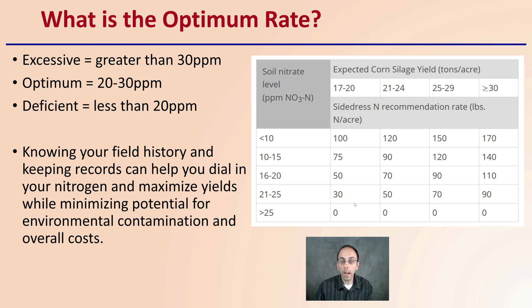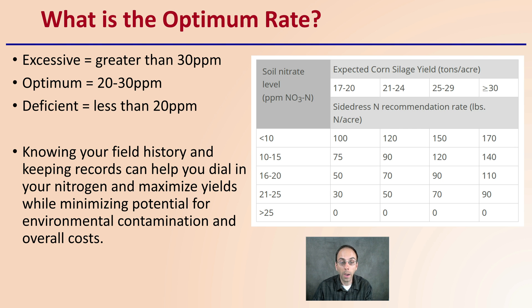What is the optimum rate? Excessive would be greater than 30 parts per million. Optimum is at 20 to 30 parts per million, and deficient would be under 20 parts per million of that nitrate nitrogen. Knowing your field history and keeping records can help you dial in your nitrogen and maximize yields, while minimizing potential for environmental contamination and increasing overall costs.